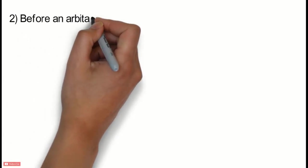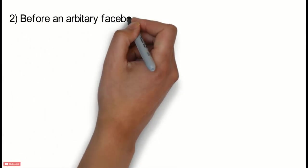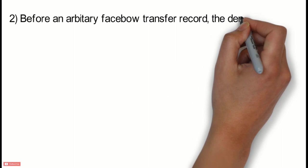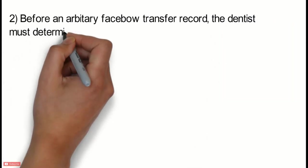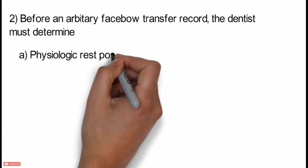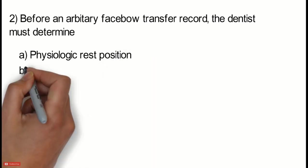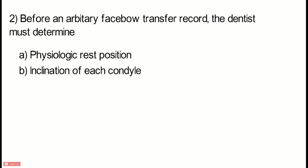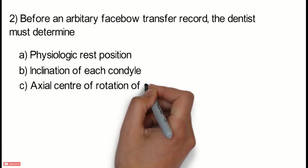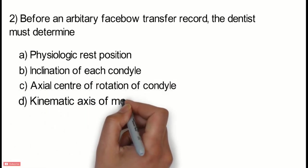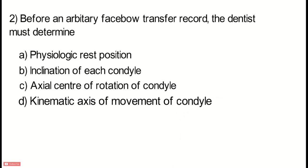Question 2: Before an arbitrary face bow transfer record, the dentist must determine — Option A: Physiologic rest position; Option B: Inclination of each condyle; Option C: Actual center of rotation of condyle; Option D: Kinematic axis of rotation of condyle.